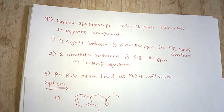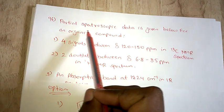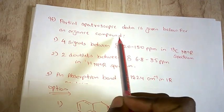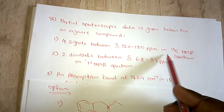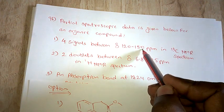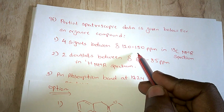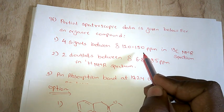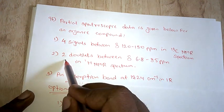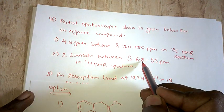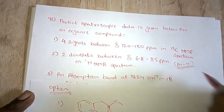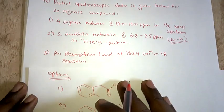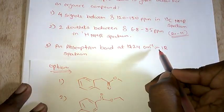Now solving the next question. Spectroscopy data is given below for an organic compound. Four signals between 120 to 150 ppm in C13-NMR - this value is for aromatic carbon. Aromatic carbon is 120 to 150 ppm, so it tells about the aromatic carbon. The doublet between delta 6.8 to 8.5 is for aromatic hydrogen. The absorption band at 1724 cm⁻¹ in IR spectra.